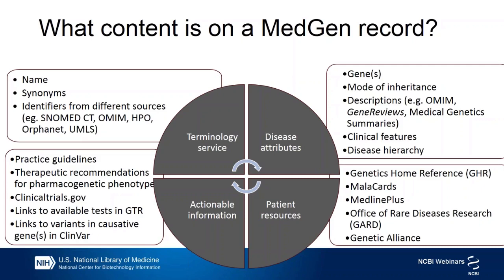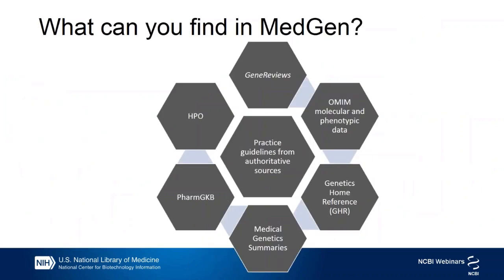You get access to patient-oriented resources like Genetics Home Reference, GARD, and MedlinePlus. And the same page provides access to actionable information, such as practice guidelines, ClinicalTrials.gov, a list of genetic tests for the disease in the GTR, and the list of variants in the causative genes in ClinVar. So these are the resources you can find in MedGen, and then some more.